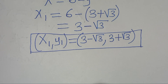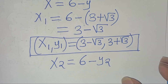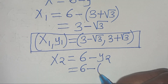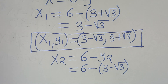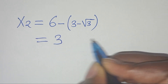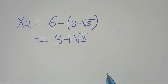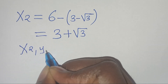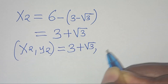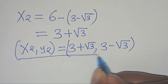Now let's find x2. x2 equals 6 minus y2, which is 3 minus square root of 3. So x2 equals 6 minus 3 plus square root of 3, which gives 3 plus square root of 3. Therefore the second set of solutions is: x2, y2 equals (3 plus square root of 3, 3 minus square root of 3).